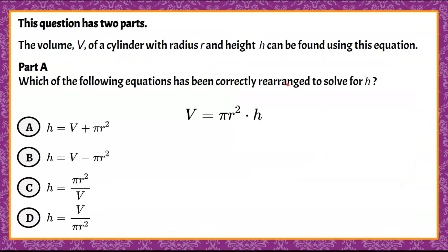Here's our question. This question has two parts. The volume V of a cylinder with a radius r and a height h can be found using this equation. Part A: which of the following equations has been correctly rearranged to solve for h? So you can see that they've taken the volume formula of a cylinder and solved it for the variable h.